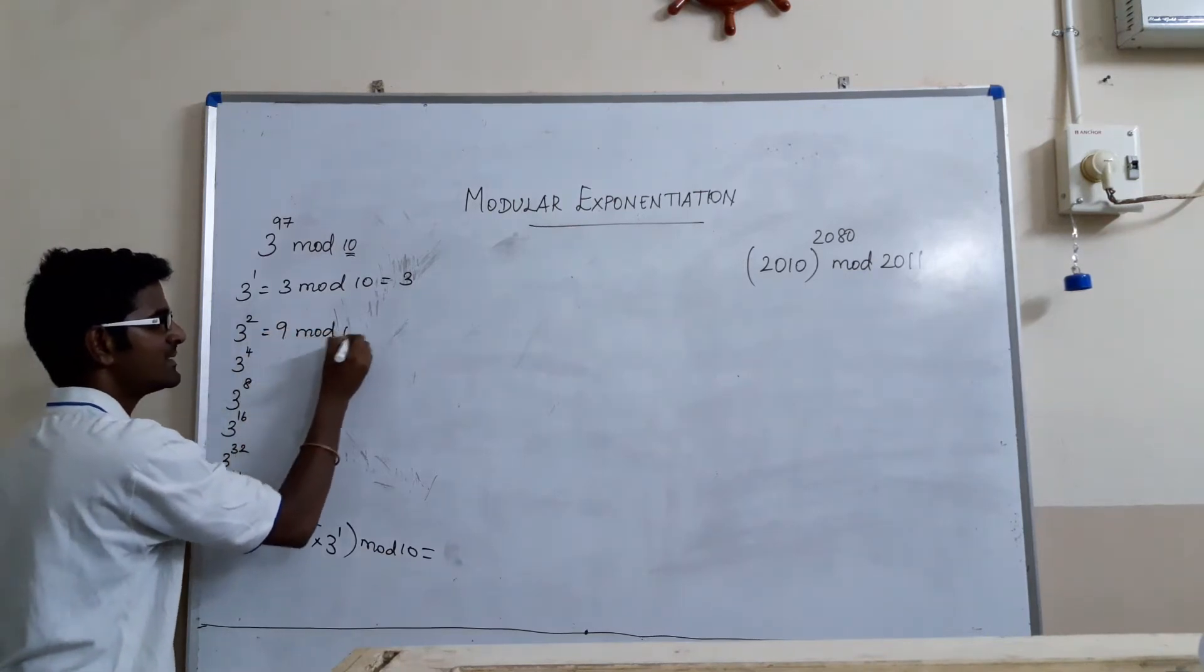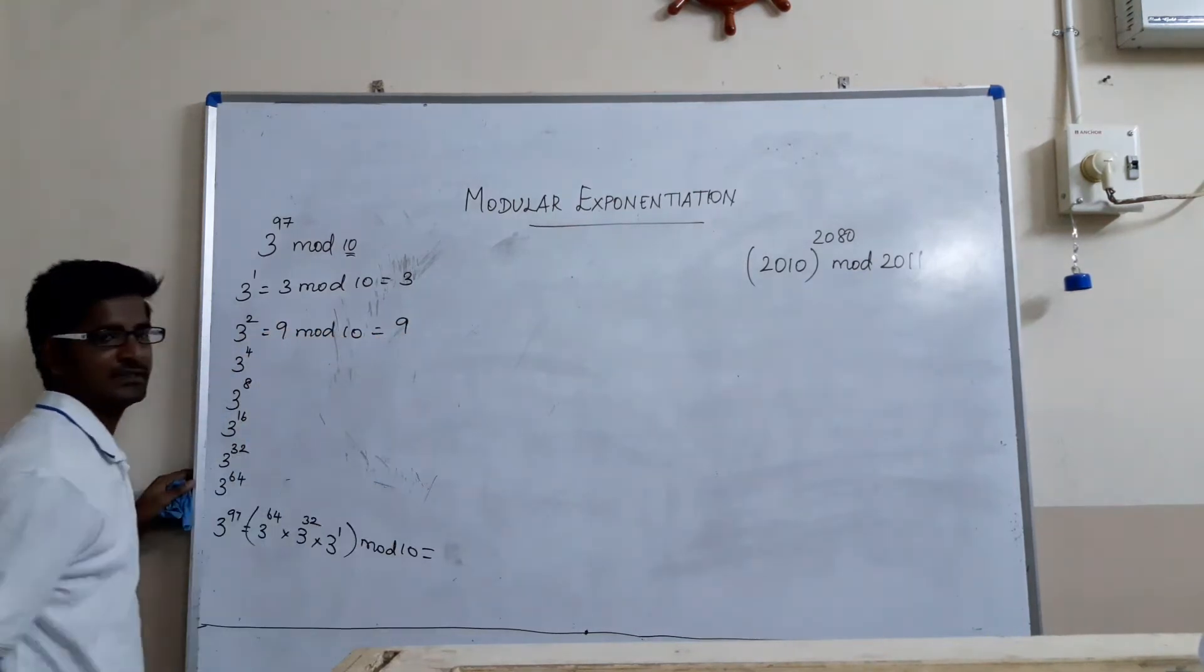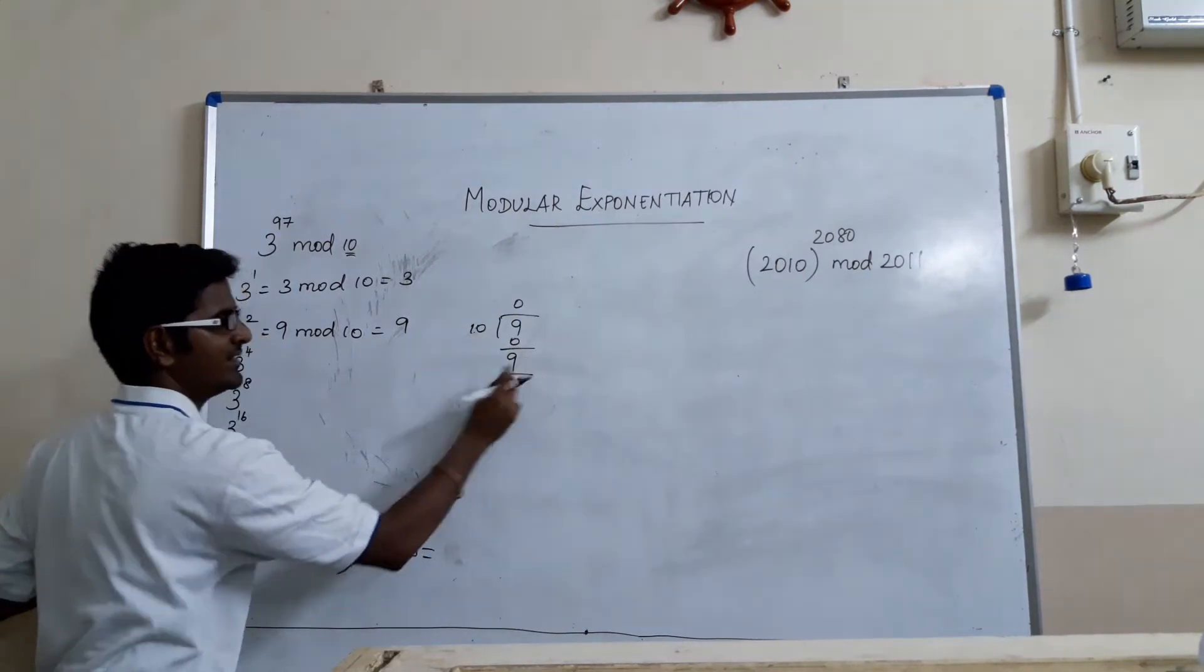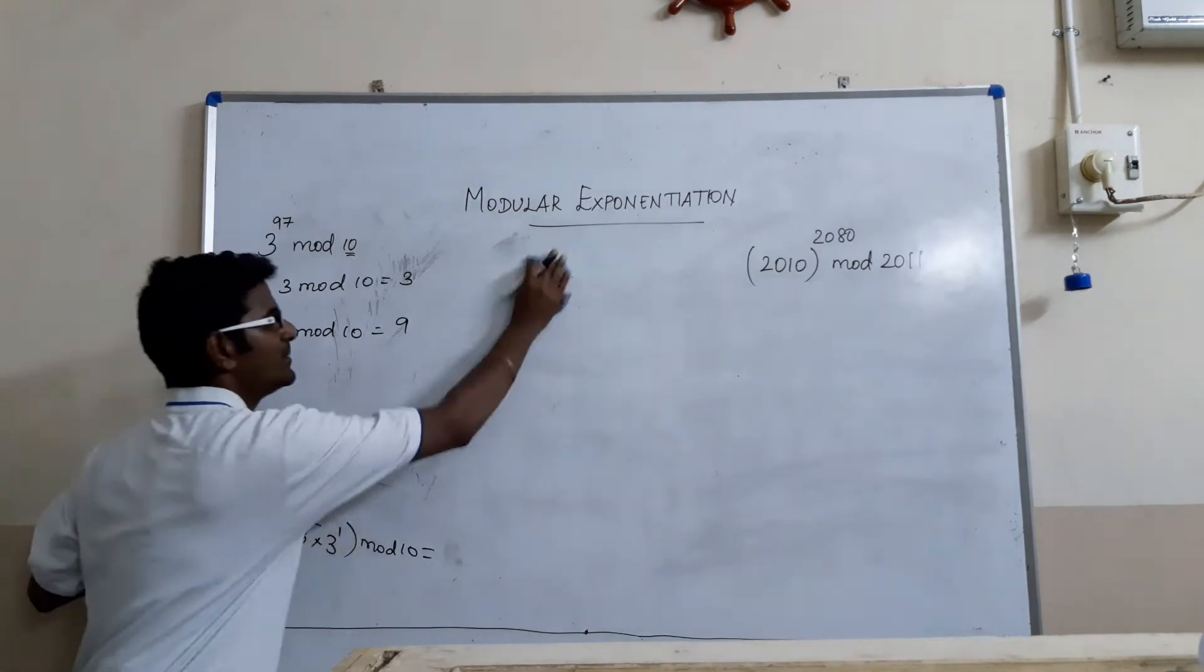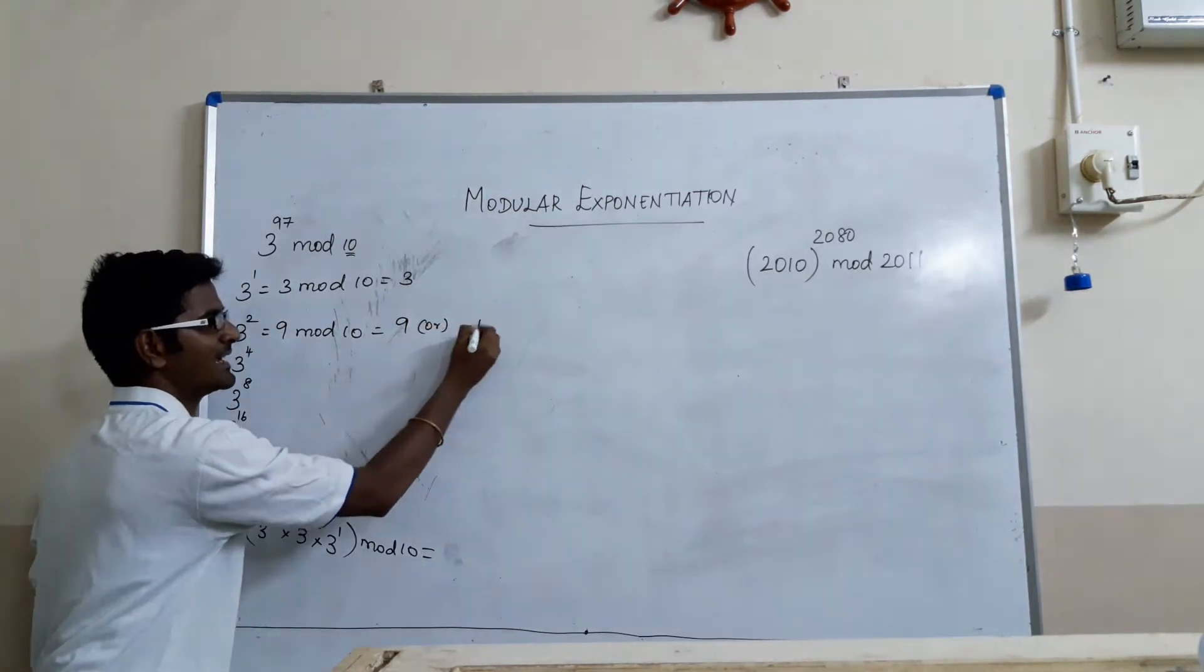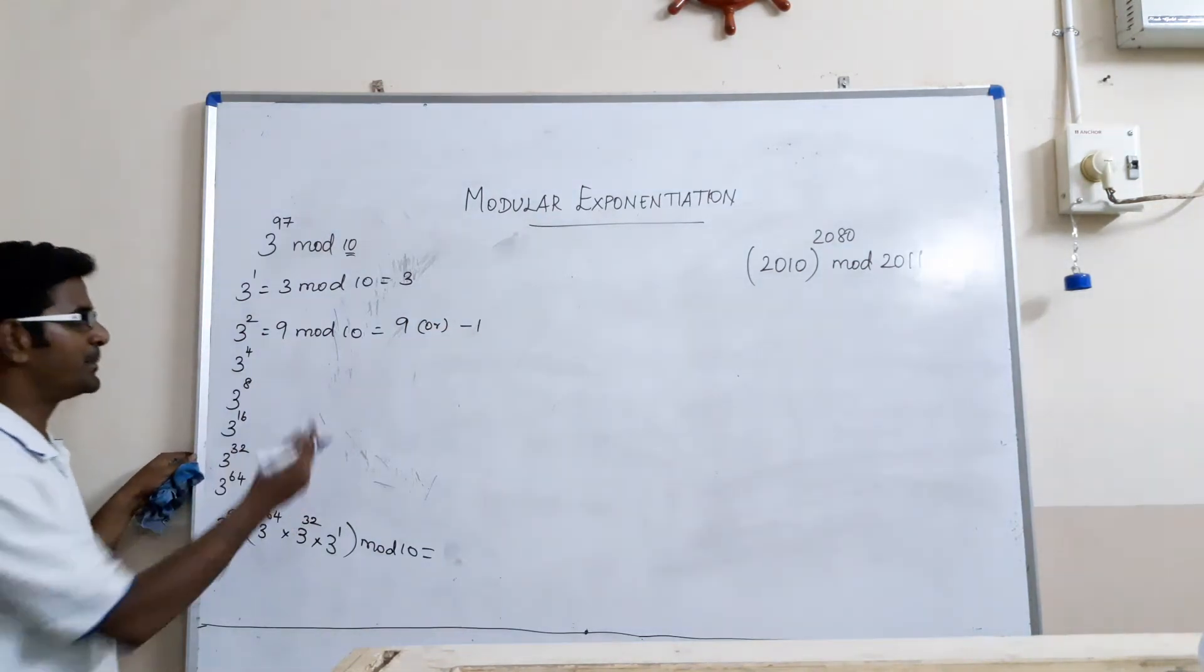9 mod 10 which is equal to 9, because 9 when it is divided by 10, 10 into 0 times 0 and the remainder is 9. We are concerned only about the remainder. But if we represent that as a negative number, we will get minus 1 which is very easy for computation.